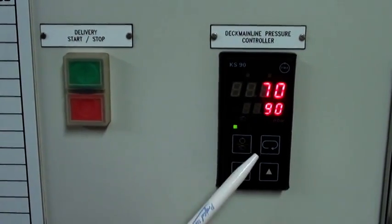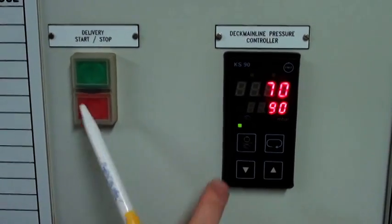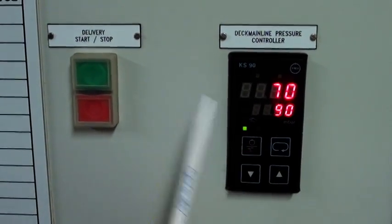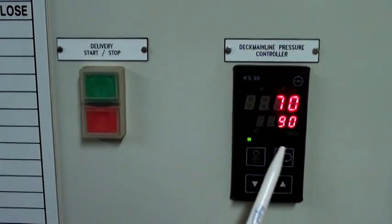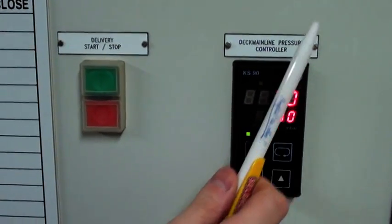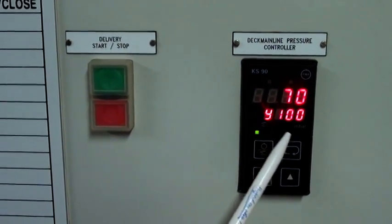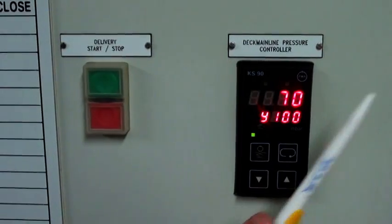Also you have a few buttons here. The button is for changing between automatic and manual. And the button to change between the settings. For example, now you can see that the delivery valve is open 100%.